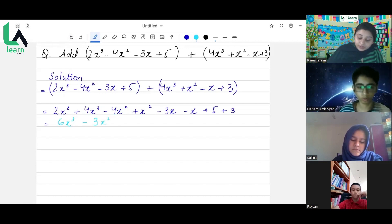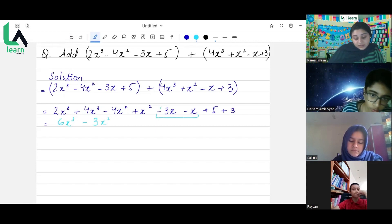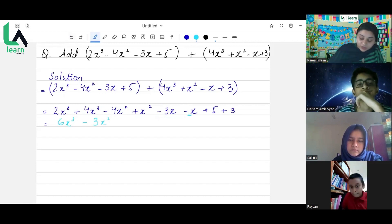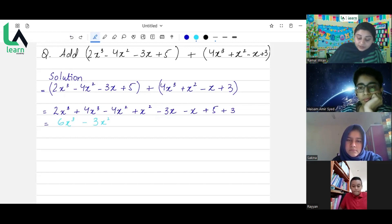Moving on to the next pair that is minus 3x minus x. Now, same thing, we have same signs, minus signs for both, so we will apply the rule of like signs. That is minus 3 and here we don't have coefficient of x, so we suppose that it has a coefficient of 1. Now minus 3 and minus 1, what we do, we add both the numbers, that is 4.